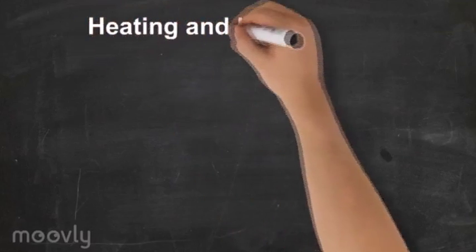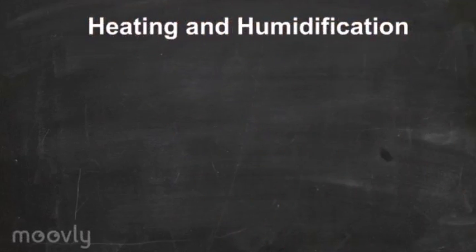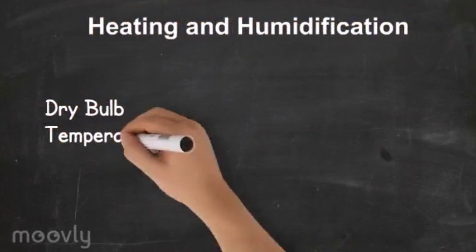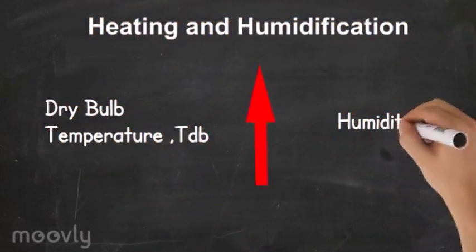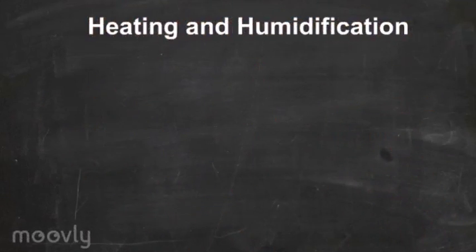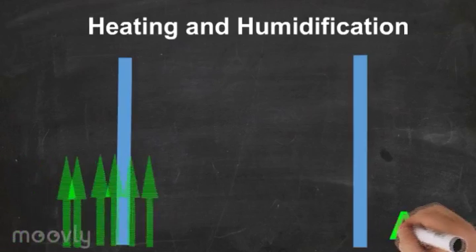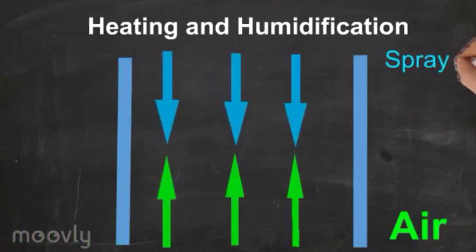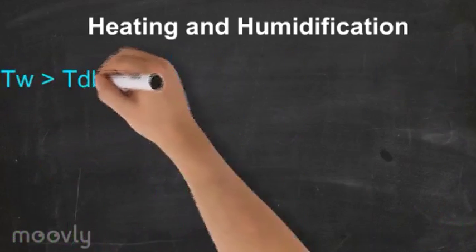In heating and humidification psychrometric process of the air, the dry bulb temperature as well as the humidity of the air increases. The heating and humidification process is carried out by passing the air over spray of water which is maintained at a temperature higher than the dry bulb temperature of the air, or by mixing air with steam.